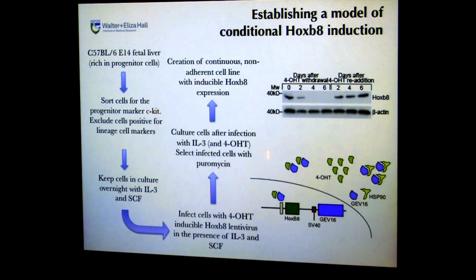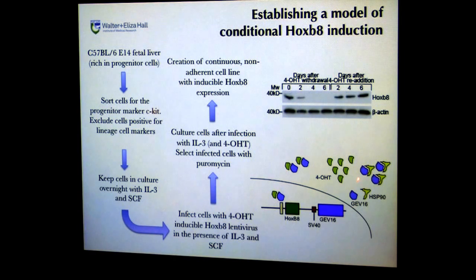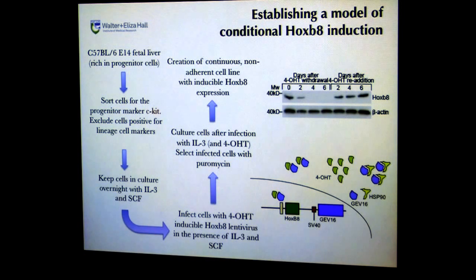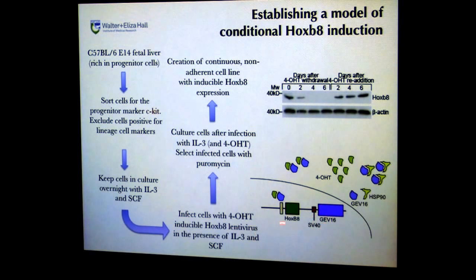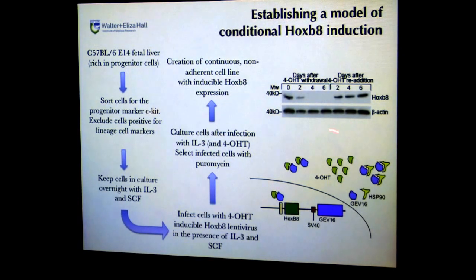Only in the presence of 4-HT do we get HoxB8 expression. Other systems have the oestrogen receptor fused directly to HoxB8, where HoxB8 is constitutively made but held in the cytoplasm until 4-HT is added. Our system is much cleaner because HoxB8 only appears in the cell when 4-HT is added. Once cells were infected with the lentivirus, they were cultured in IL-3 and 4-HT to induce HoxB8 expression, and successfully infected cells were selected with puromycin. We created a continuous non-adherent cell line with inducible HoxB8 expression, confirmed by Western blot — withdrawing 4-HT for six days showed no detectable HoxB8 by day four, and re-addition of 4-HT restored re-expression.